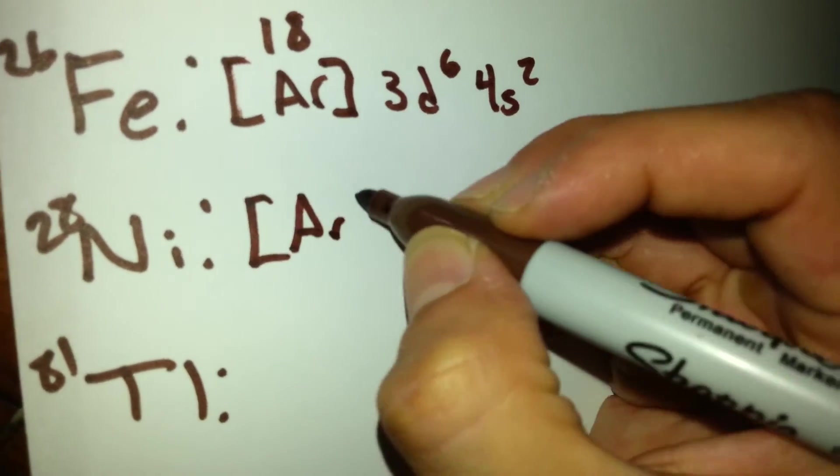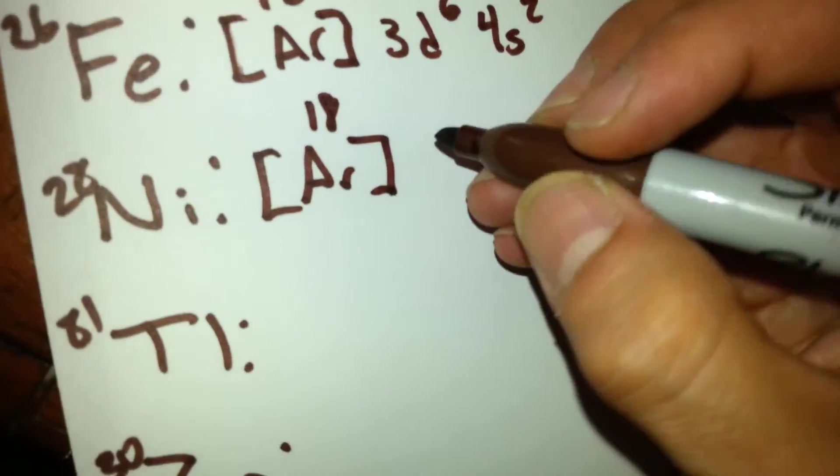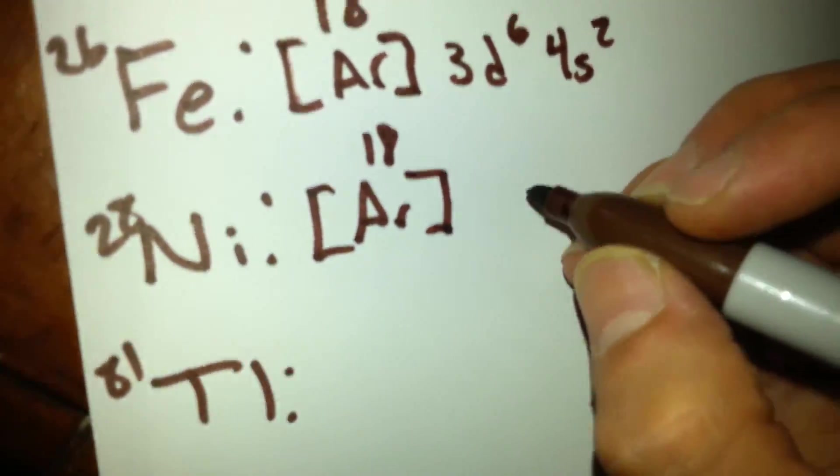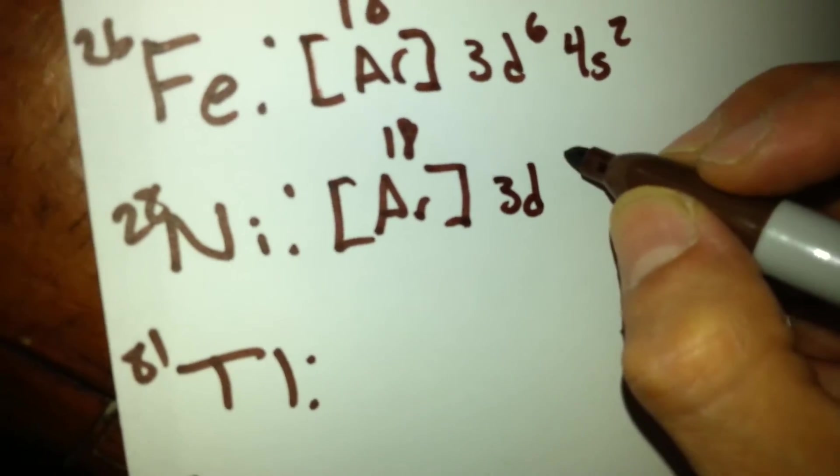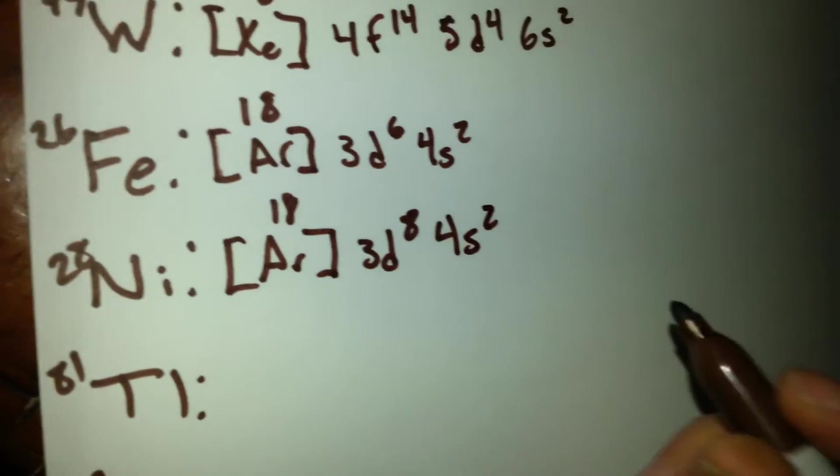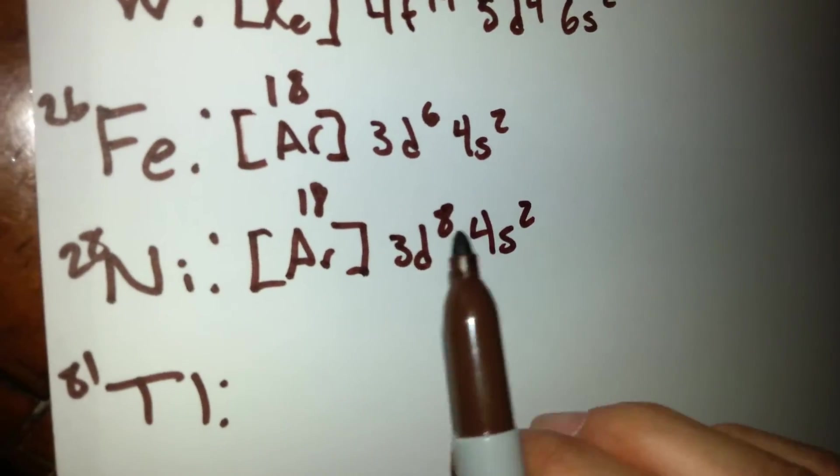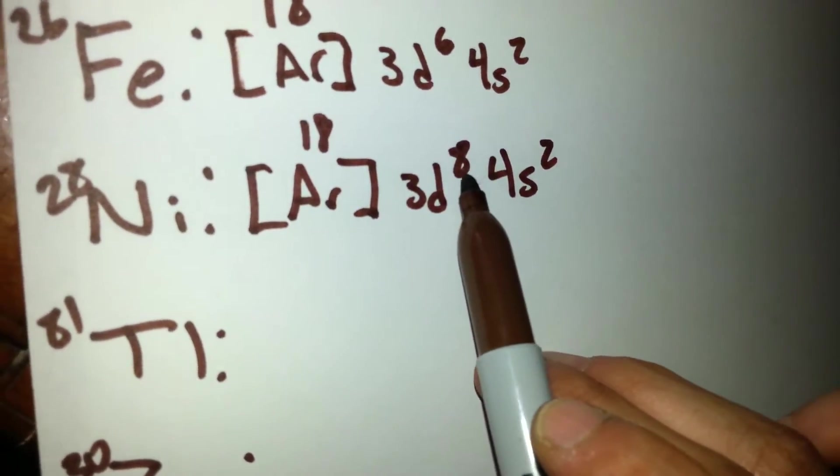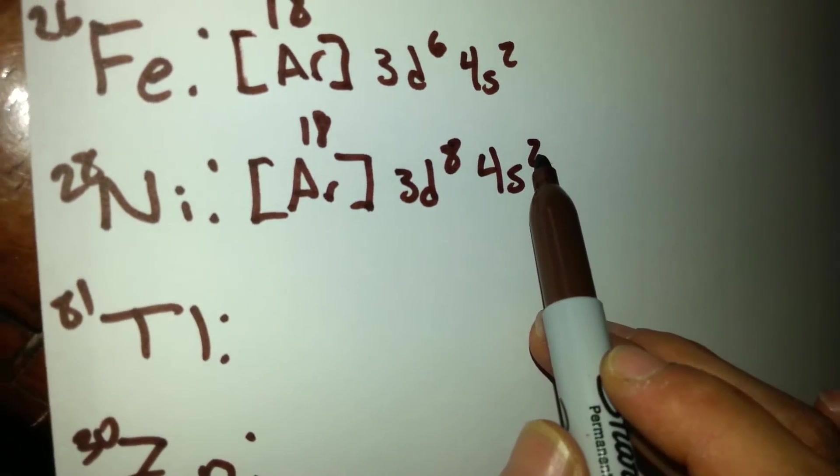We will utilize argon again for nickel, giving us 18. After that, the 3d orbital will have a total of 8 electrons, and the 4s orbital will have 2, giving us 18, plus 8, 26, plus 2, 28.